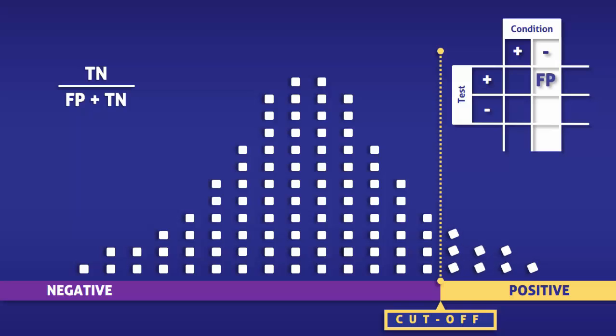In the top box, we have the false positives, in the middle box the true negatives, and on the bottom the total number of people without the condition.